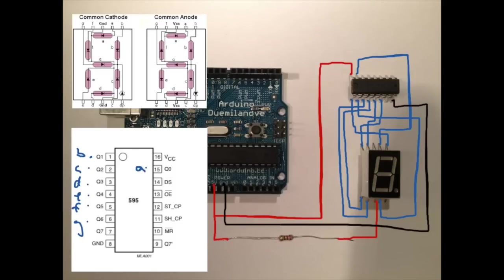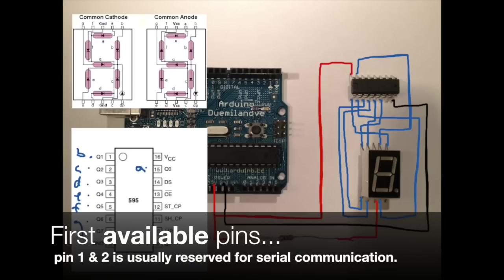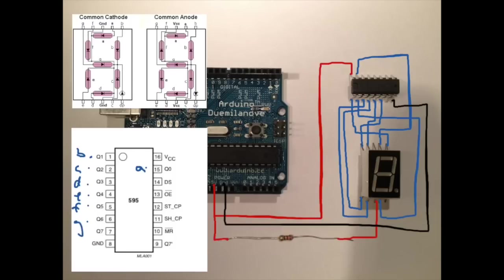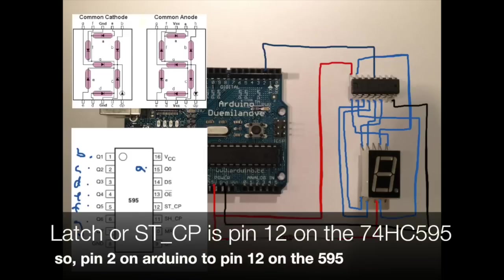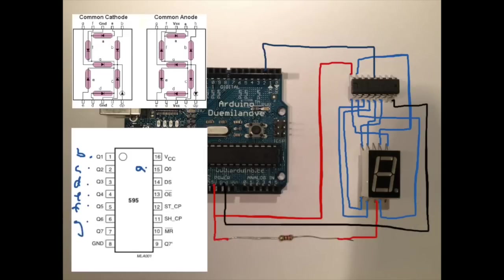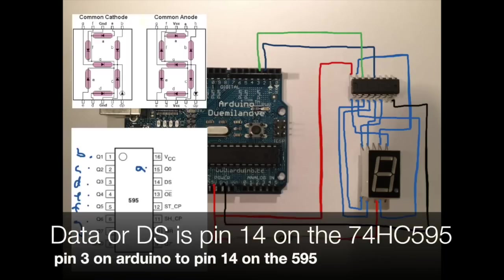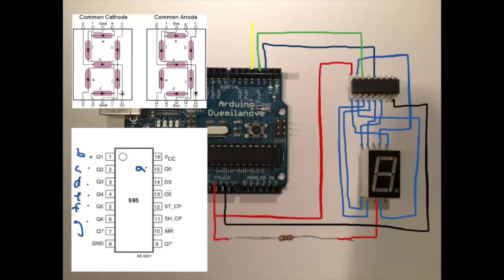Now we need to connect three pins to the Arduino and we use the first three pins, two through four. So pin number two is going to be the latch pin or STCP. Pin three is going to be the data pin.